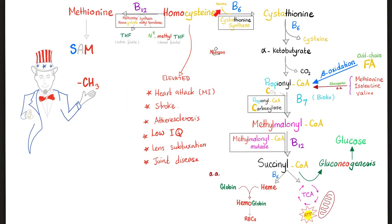Let's review homocysteine. Homocysteine has two paths: it can become methionine or it can become cystathionine, each requiring a specific enzyme. If the enzyme toward methionine is deficient, homocysteine goes up. If the enzyme toward cystathionine is deficient, homocysteine also goes up. Very high levels of homocysteine are dangerous — increasing the risk of heart attacks, strokes, atherosclerosis, low IQ, lens subluxation, and joint disease. You can measure homocysteine in the blood and urine — it will be high. High homocysteine with low methionine indicates the deficiency is on the methionine side; high homocysteine with low cystathionine indicates the other deficiency. That's why we need amino acid profiles.